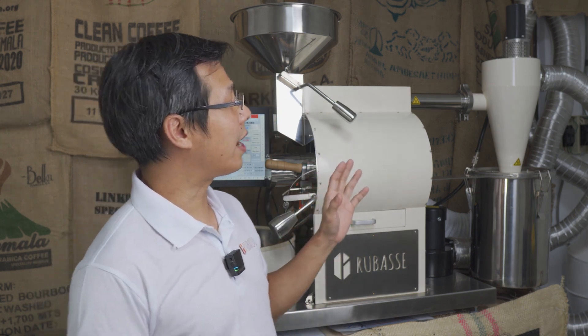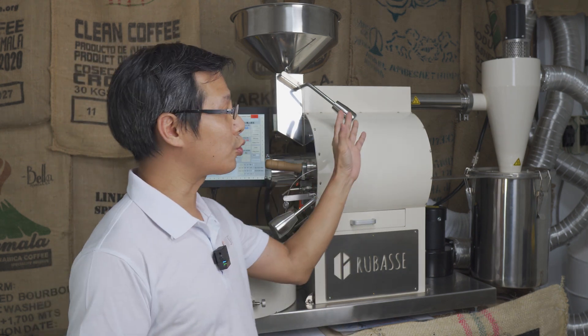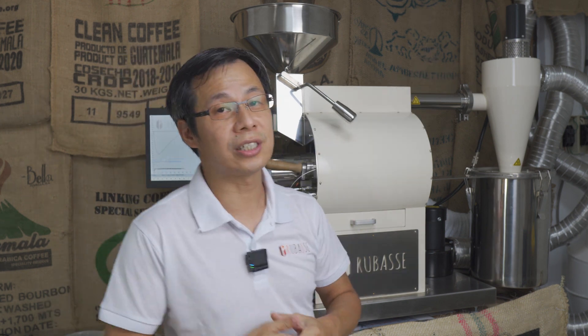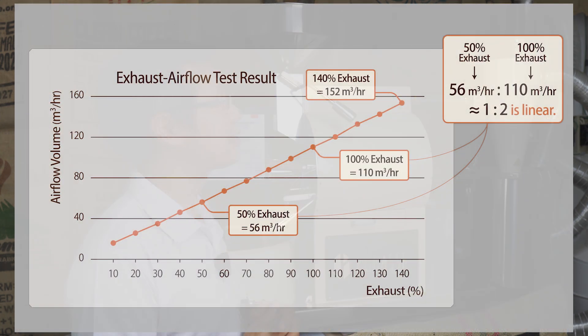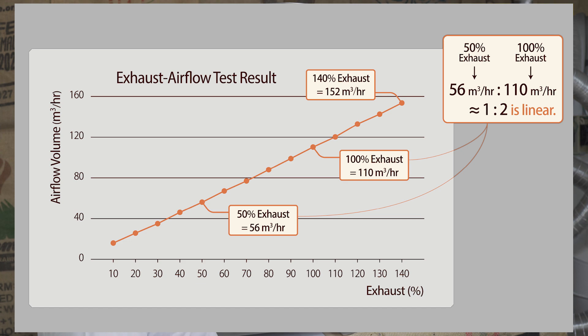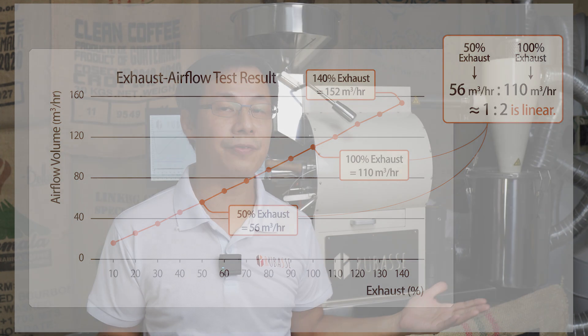Before I proceed, I'd like to talk about our exhaust fan. This motor is actually an electronic motor with variable rotation speed. When you increase the rotation speed, it allows more airflow to pass through, increasing the velocity of the airflow. As we know, pressure and the velocity of airflow have a direct correlation.